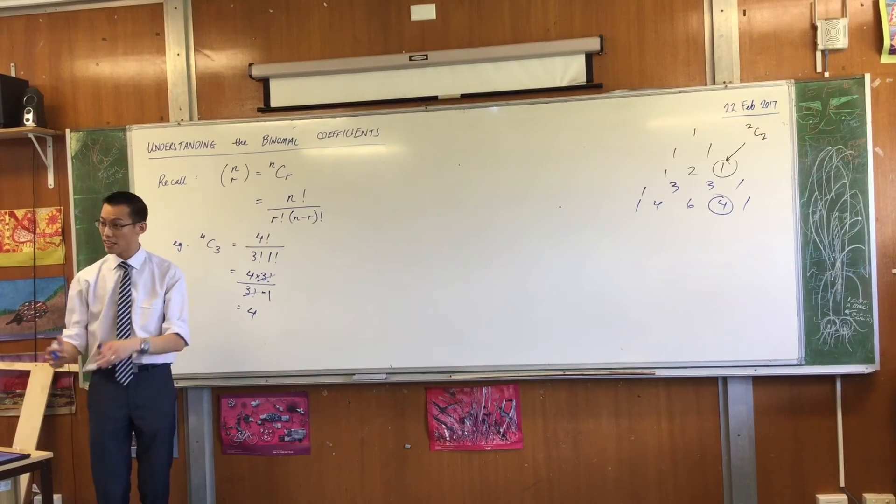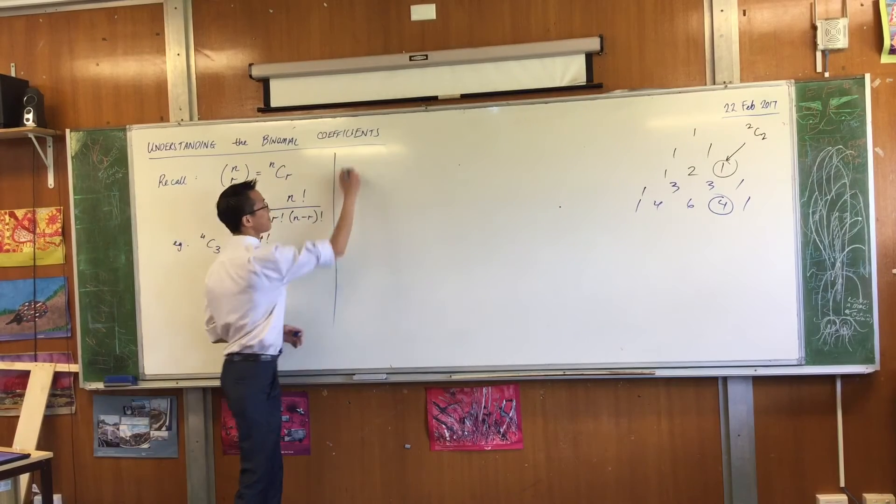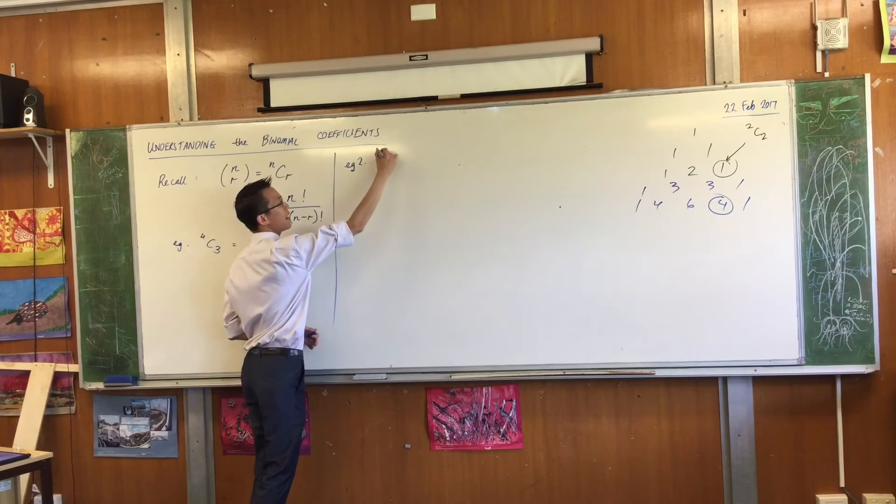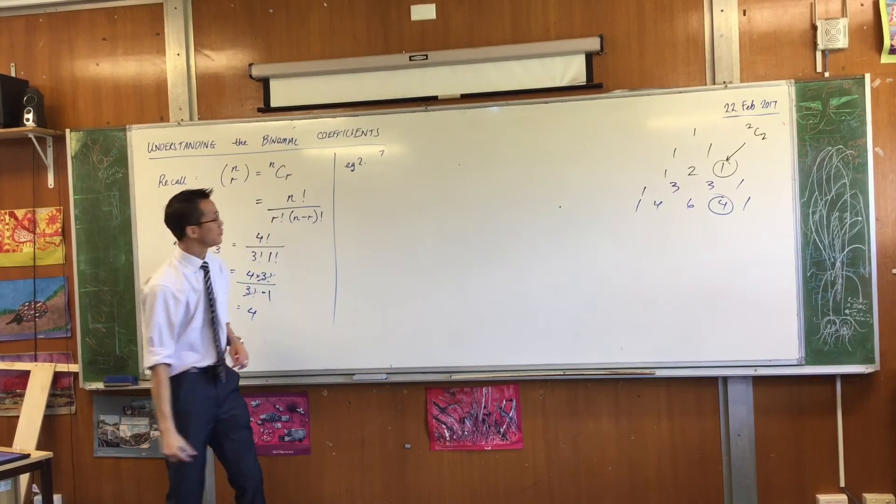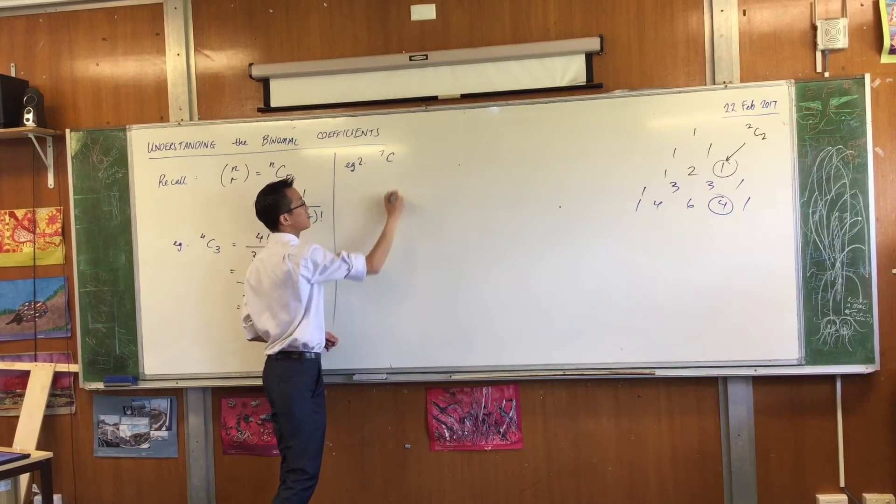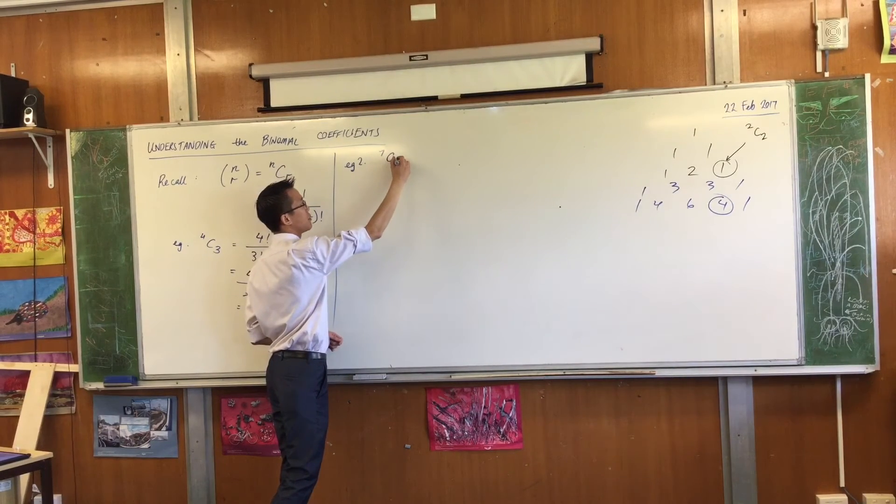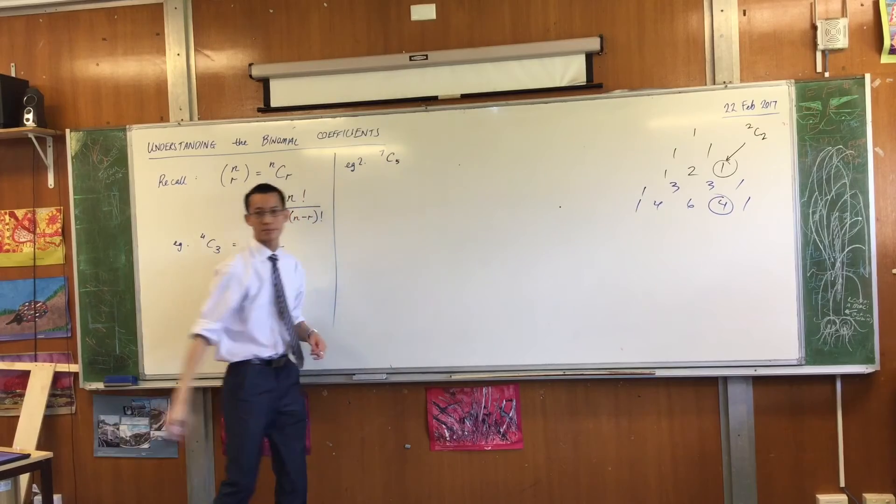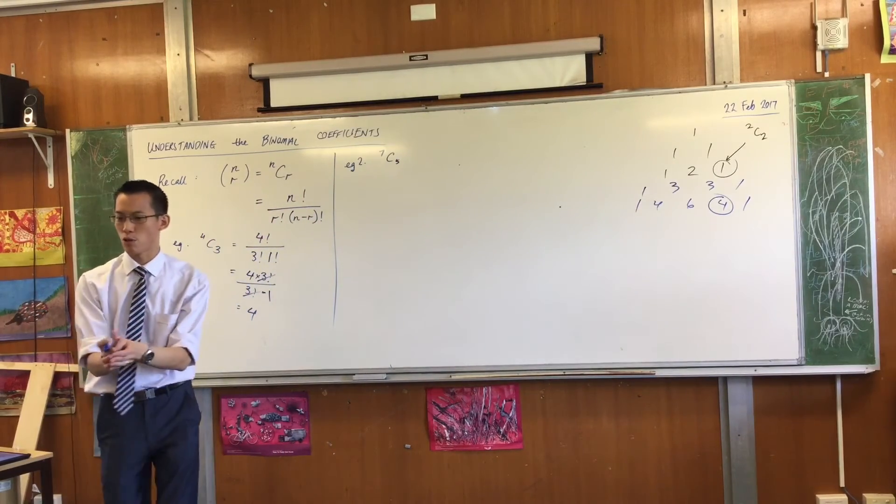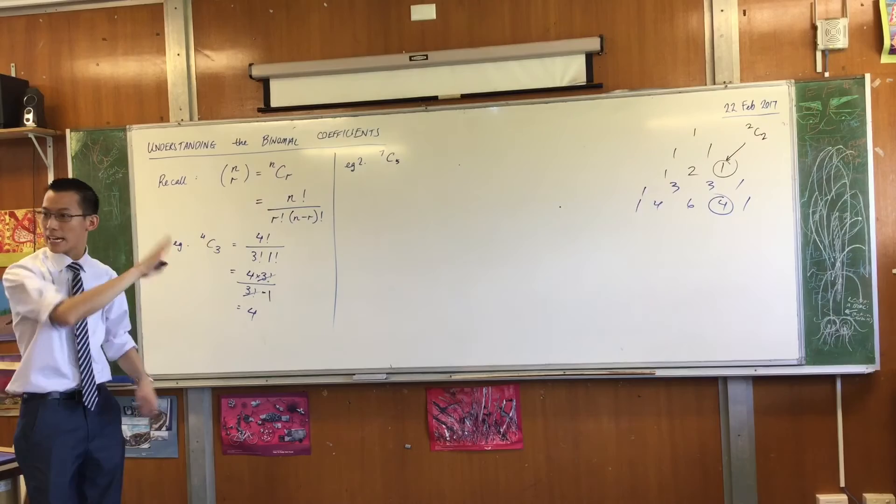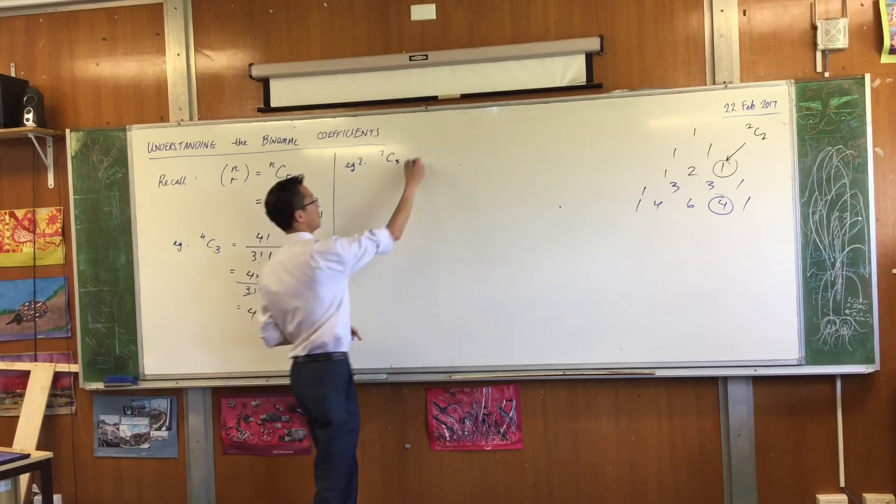Let's try something a little further down. So how about, here's an example too. How about on the 7th row, let's get something close to the middle. How about this guy? Now, hopefully, I mean, you should have drawn Pascal's triangle far enough that you've got this there, but let's calculate it and see how it works.